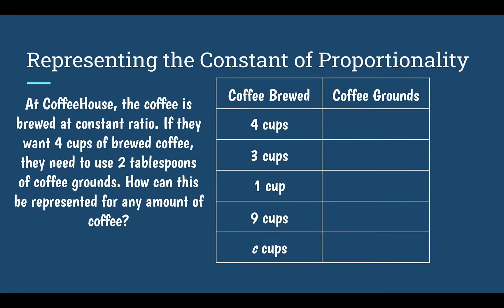First, let's look at representing our constant of proportionality. The constant of proportionality is that number that you are multiplying by to keep equal ratios throughout your table. Here we have a problem: at the coffee house, the coffee is brewed at a constant ratio. If they want four cups of brewed coffee, they need to use two tablespoons of coffee grounds. How can this be represented for any amount of coffee — not just the ones in the table? We know four cups has to equal two tablespoons.